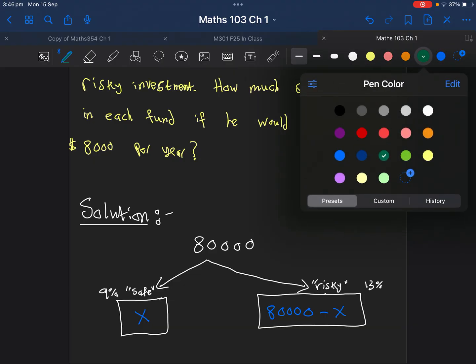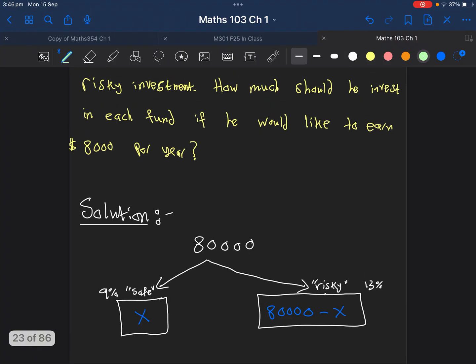Next step is to find how much interest I will get. If you have X here and this is the rate, you just multiply them with each other. The 9% is exactly the same as 0.09 (divide it by 100), and the 13% is 0.13. So the interest will be 0.09 times X, and the other interest will be 0.13 times this amount here, which is 80,000 minus X.